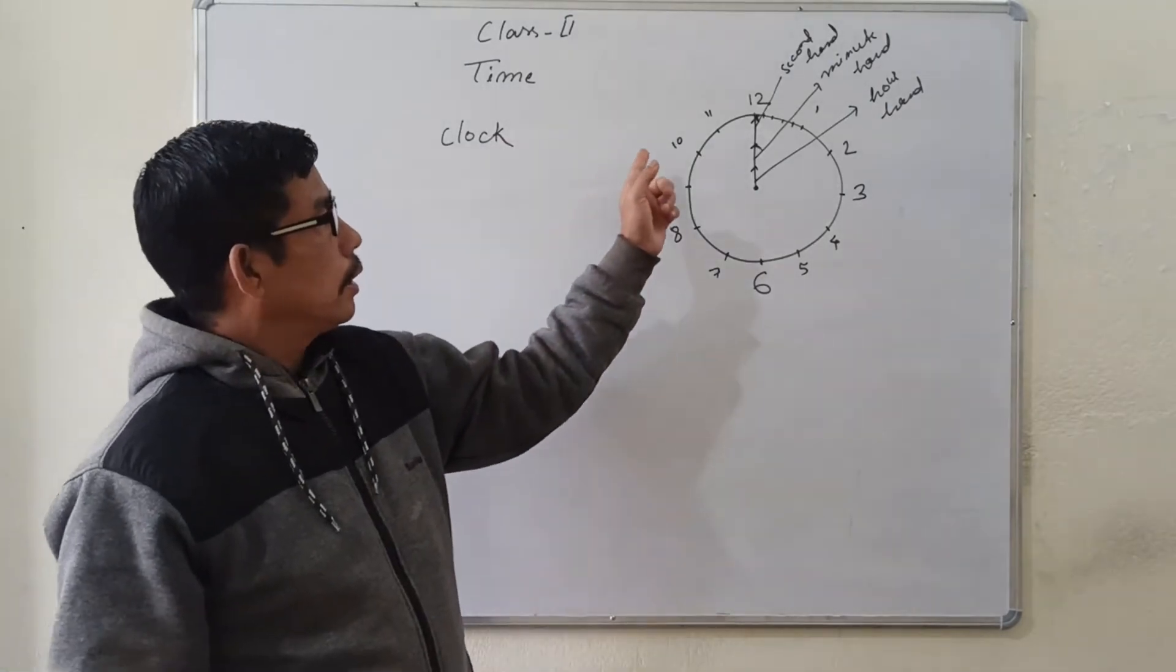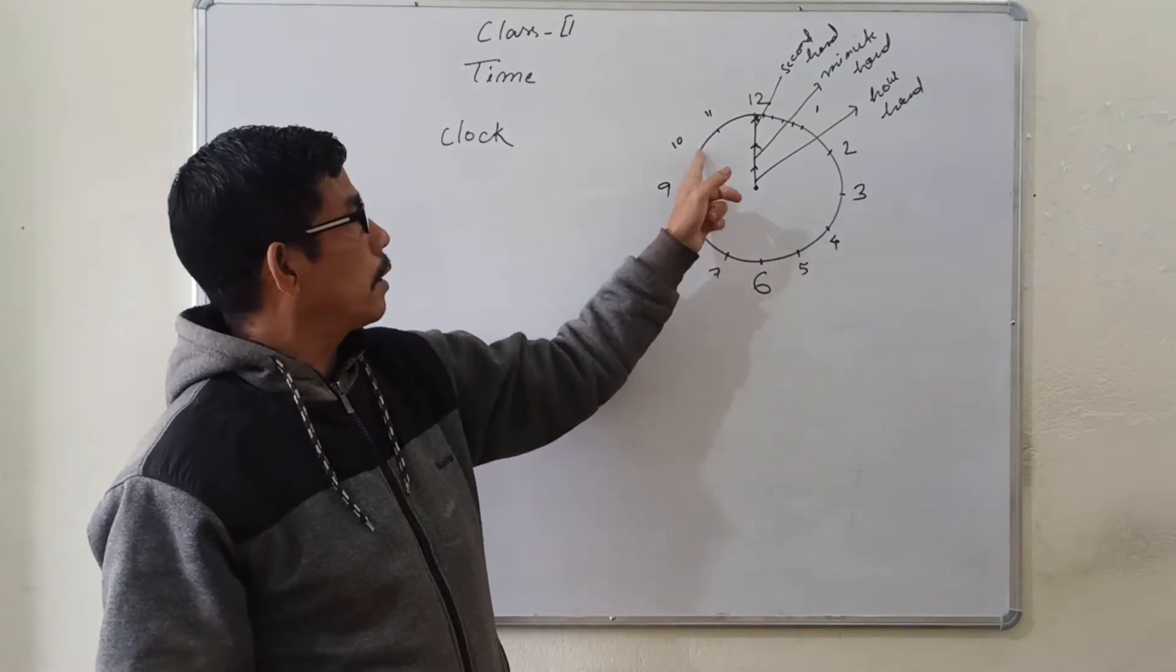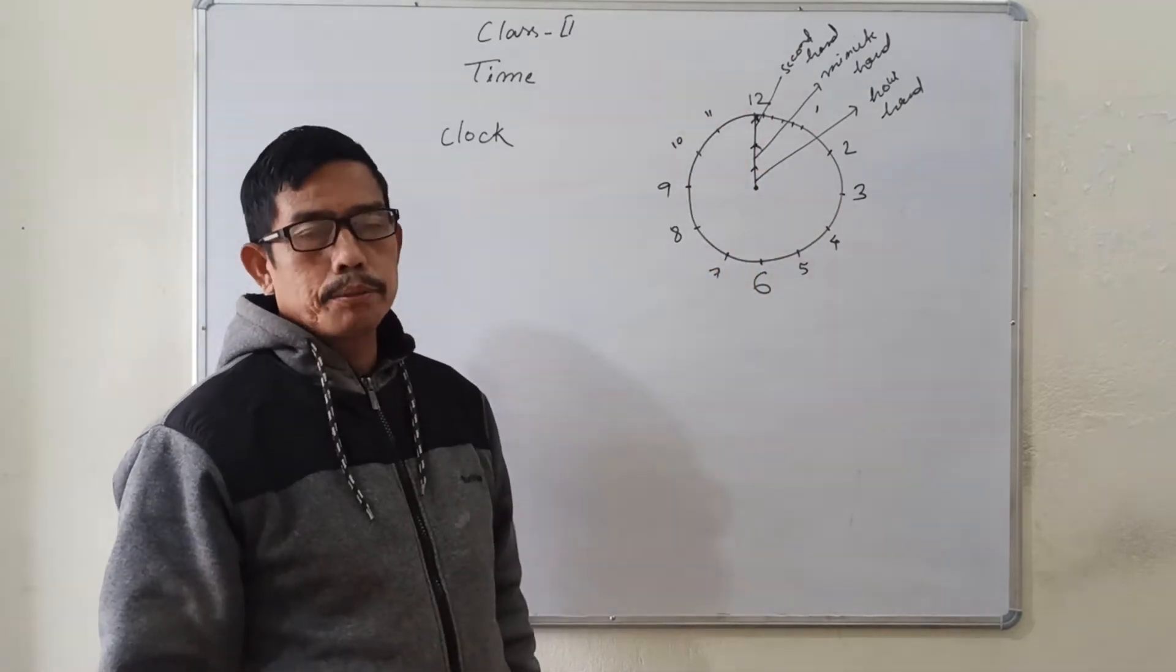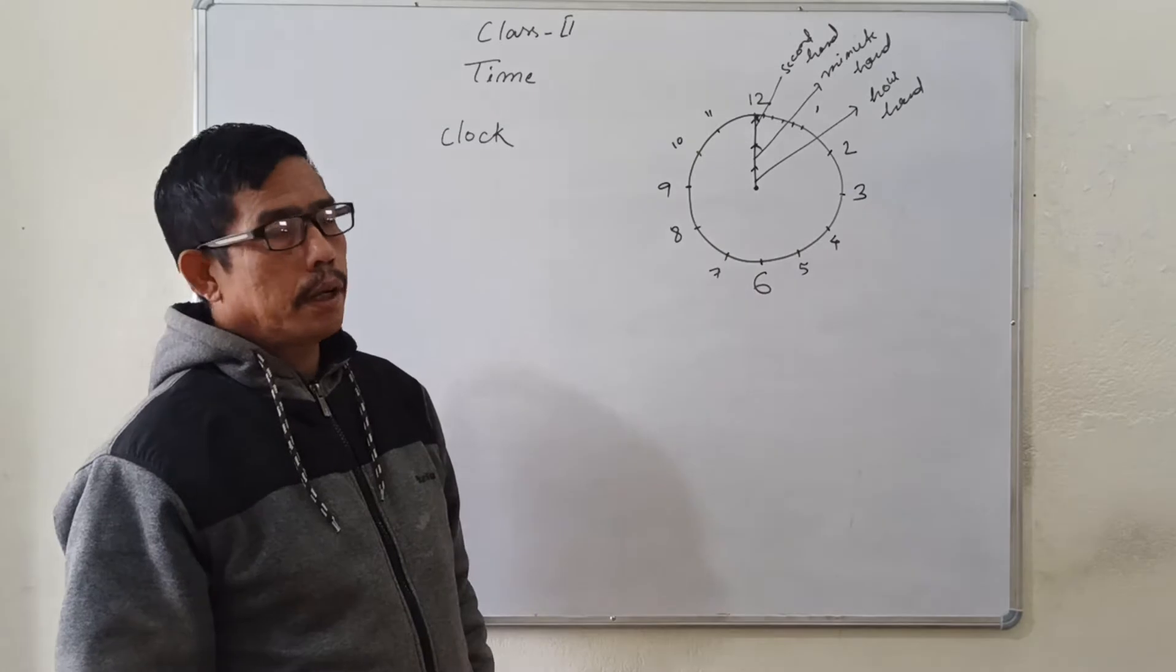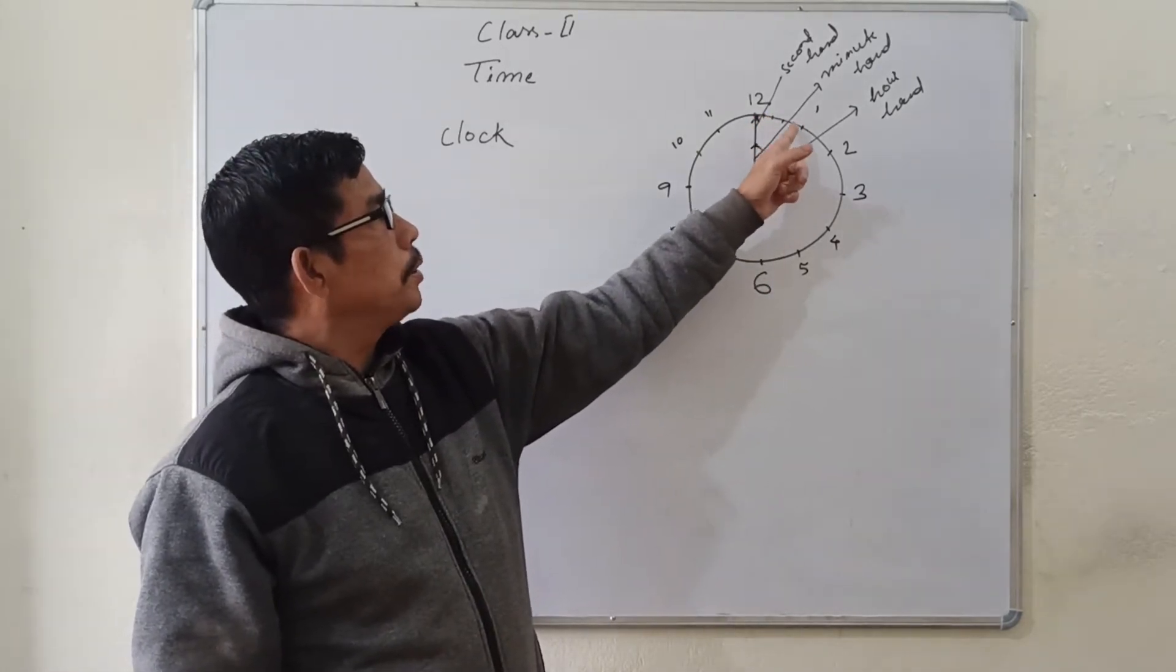And in the clock, there are 1, 2, 3, 4, 5, 6, 7, 8, 9, 10, 11, 12. Twelve divisions are here. And in every division, five smaller divisions are here.